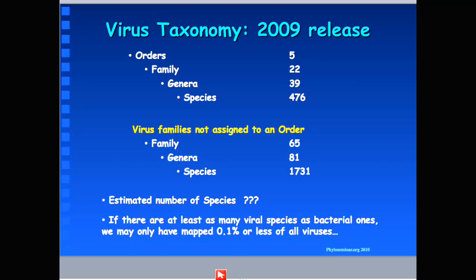Let me tell you a little bit about what we know right now about viral taxonomy. This slide is from the viral taxonomy webpage, the 2009 release. So far, viruses have been basically organized and classified into five different orders, 22 different families, each one divided into 39 genera and 476 different species. There are also 65 families, 81 genera and more than 1,700 species that have not been assigned to any specific order. So basically, we really know very little right now about viral classification and viral taxonomy.